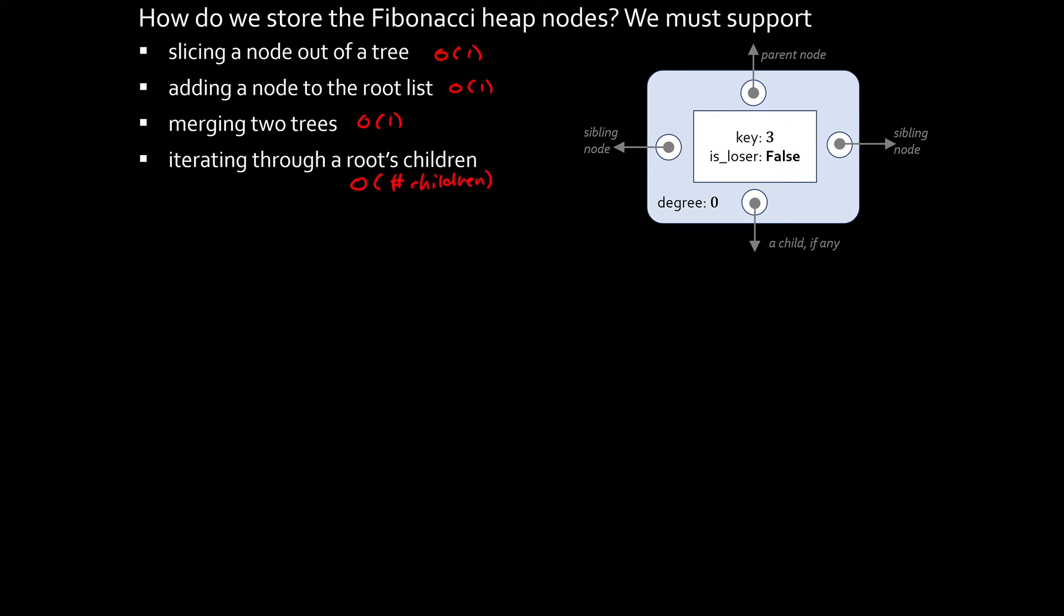In addition to these pointers, obviously we should store the key for each node. Each node also has to store a flag saying whether or not it's a loser, and also we might as well store the degree of a node. This is useful for the cleanup phase of pop min, where we want to repeatedly merge trees of equal degree. So we'll just keep a running total of the degree so we don't need to go and count all the children.